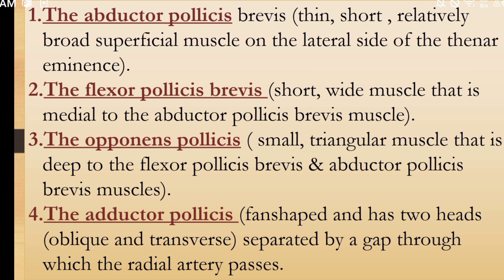The abductor pollicis brevis is a thin, short, relatively broad, superficial muscle on the lateral side of the thenar eminence. Second, the flexor pollicis brevis is a short, wide muscle that is medial to the abductor pollicis brevis muscle. The opponens pollicis is a small triangular muscle that is deep to the flexor pollicis brevis and abductor pollicis brevis muscles. Last, the adductor pollicis is fan-shaped and has two heads — oblique and transverse — separated by a gap through which the radial artery passes.